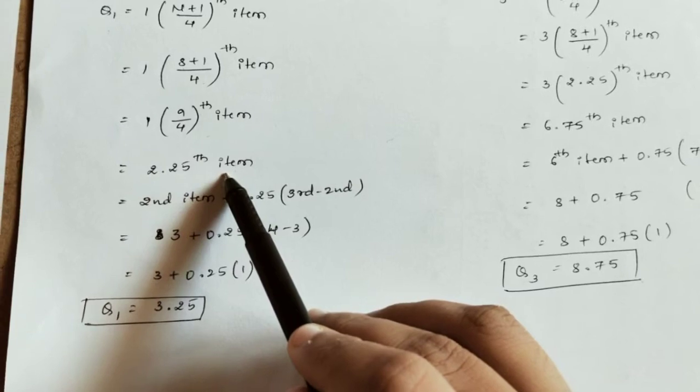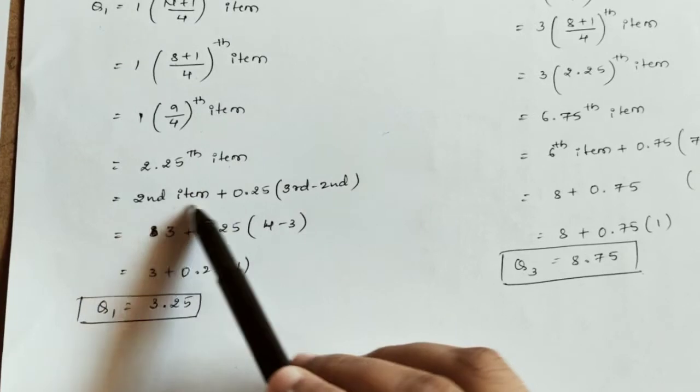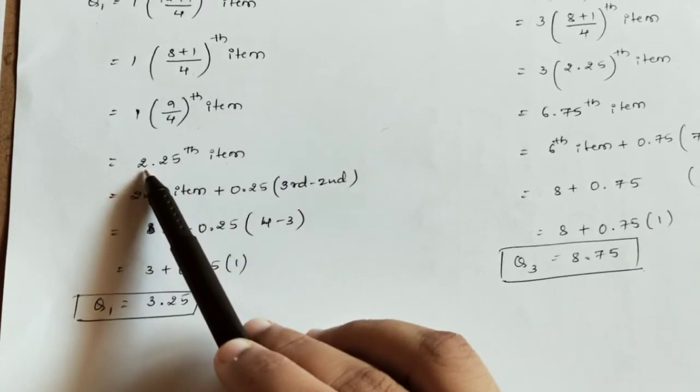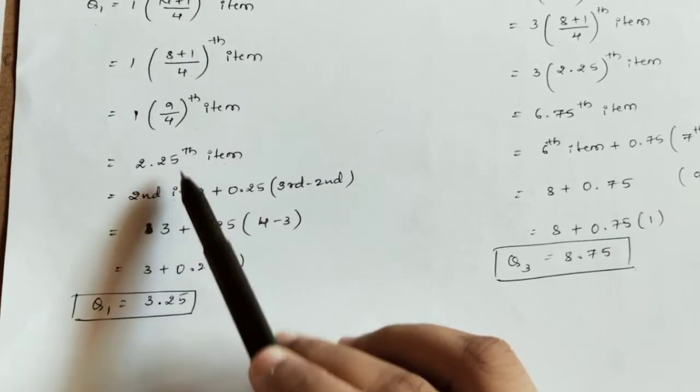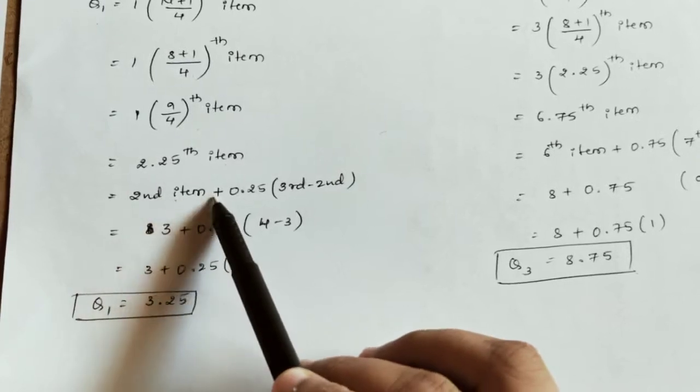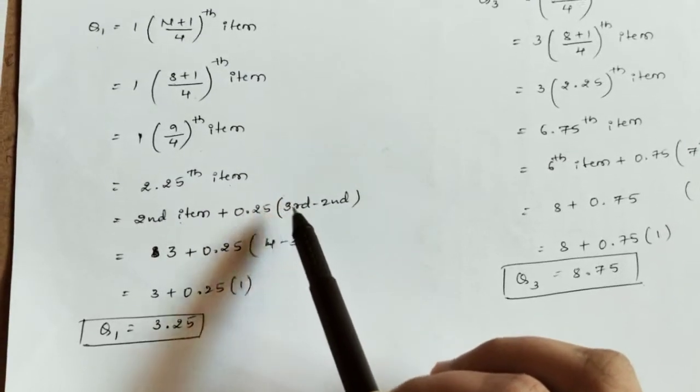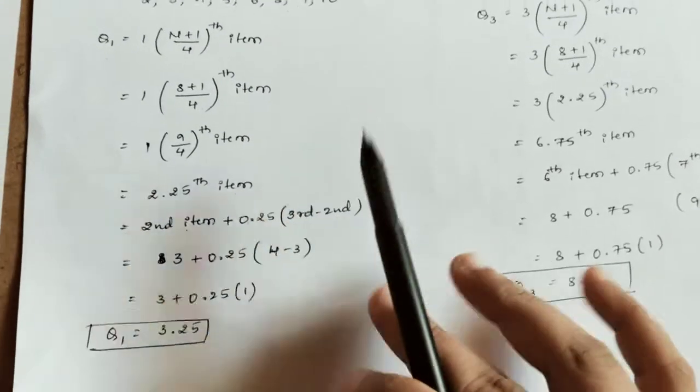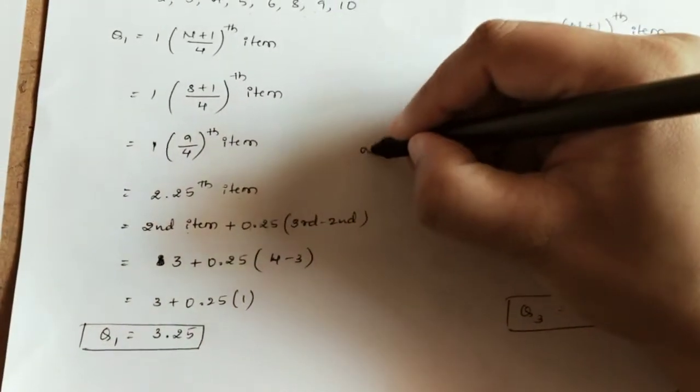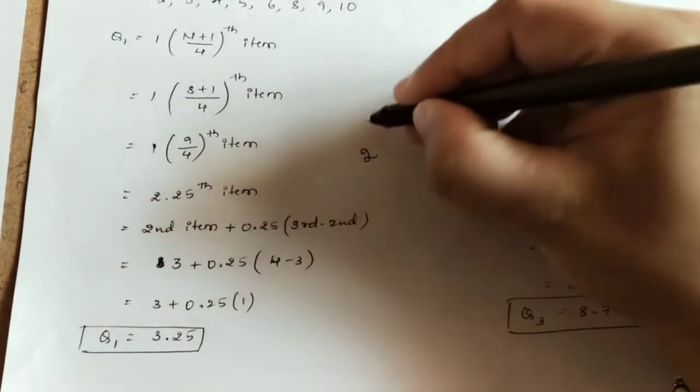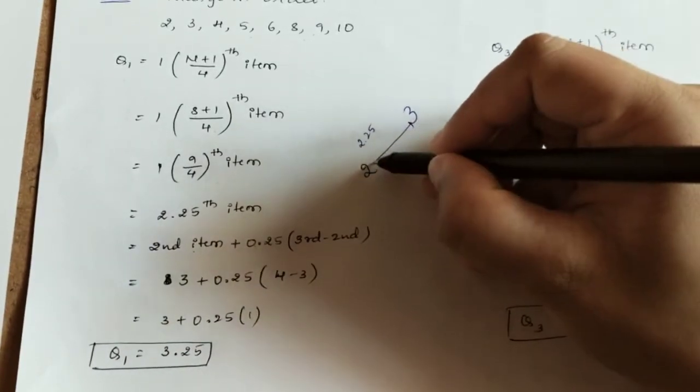Now 2.25th item means we need to split it. We take the second item plus 0.25. The formula is: second item plus 0.25 into third item minus second item.